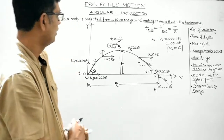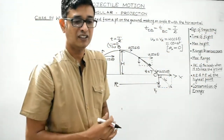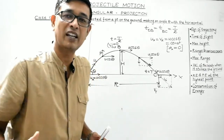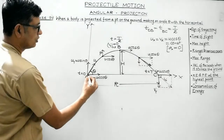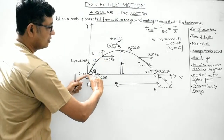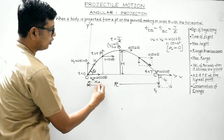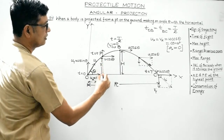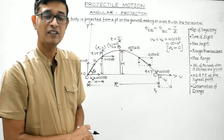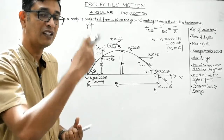First, we find the equation of trajectory — the path followed by a projectile. Suppose during time t, the body has covered horizontal distance x and vertical distance y from O to P. Considering motion from O to P along horizontal using the second equation of motion: sx = uxt + ½ axt². In time t, the body has covered horizontal distance x, ux = u cosθ, and ax = 0. So we get t = x/(u cosθ). This is equation 1.